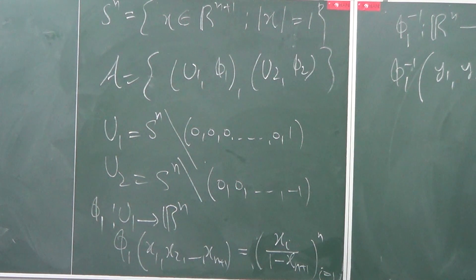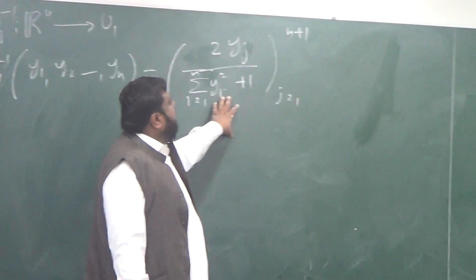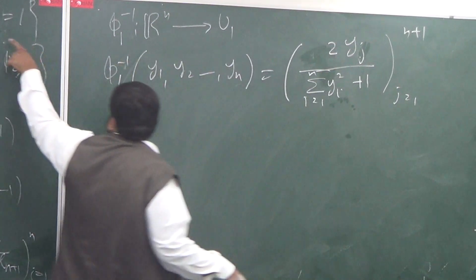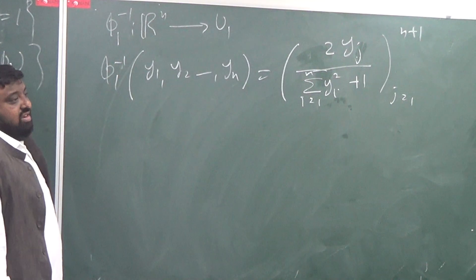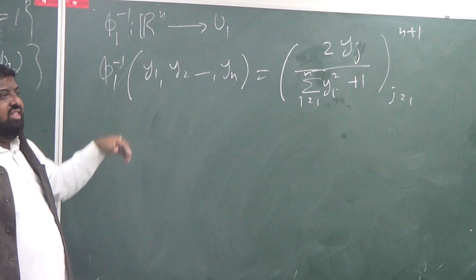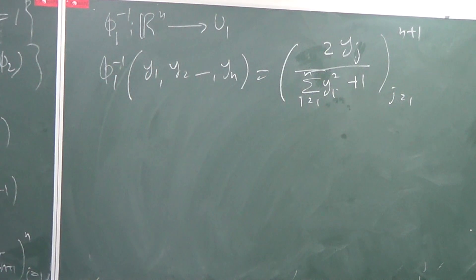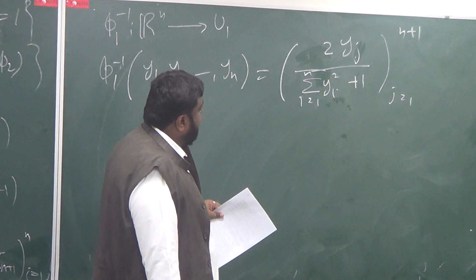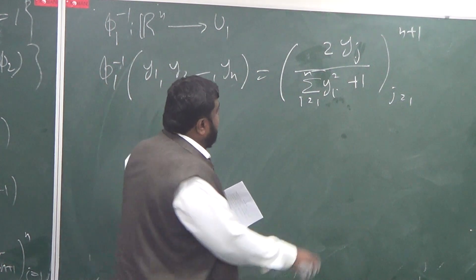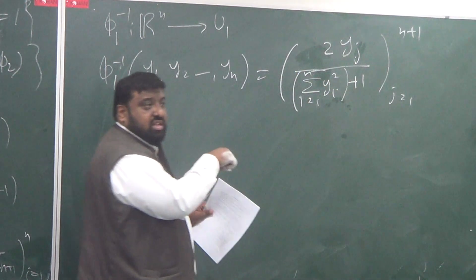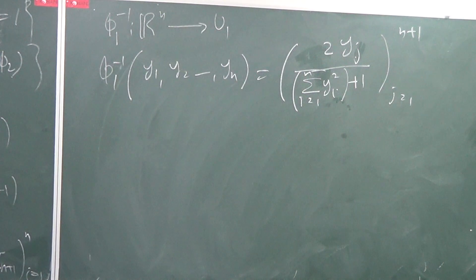Similarly, we can also prove that φ1 inverse is continuous. Here, this is a map from a point on the sphere. What you need to do is check this: take the components, square them, add them up, and you should get 1 — confirming it lies on the sphere. We can also see that x_{n+1} as a component is well-behaved here, and that φ1 inverse is also continuous.